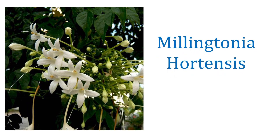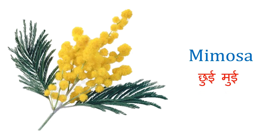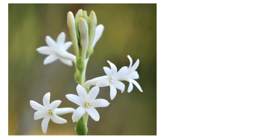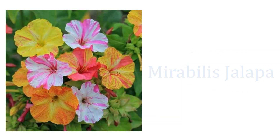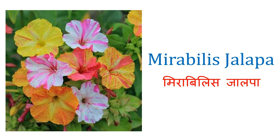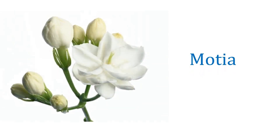Millingtonia Hortensis — Neem Chameli. Mimosa — Chhuimui. Mexican Tuberose — Rajnigandha. Mirabilis Jalapa — Mirabilis Jalapa. Monsoon Lily — Safed Musli. Motiya — Motiya.